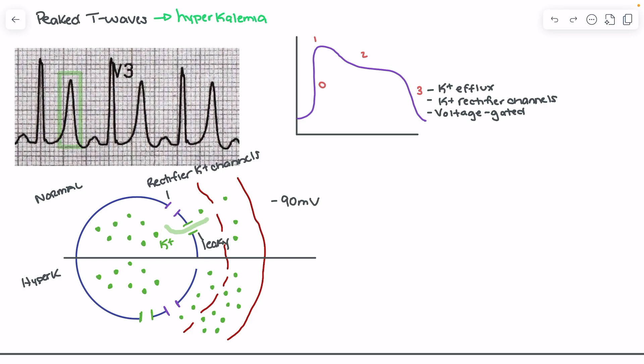In normal conditions, the inside of the cell is more negatively charged versus outside, partly due to large negative proteins that live inside the cell. Because potassium concentration inside is greater than outside, we favor a net efflux of potassium — and that is how we get to around negative 90 millivolts, where potassium reaches its equilibrium potential.